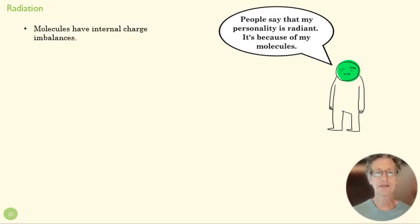Molecules have internal charge imbalances. It's easy to imagine, like water - it has two hydrogens and an oxygen, so you're going to have an imbalanced set of protons and electrons. But even in a simpler molecule, you're going to have electrons in different places. Essentially, you're going to have some kind of internal charge imbalance in any molecule.